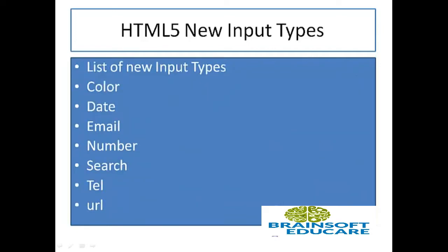This is an exhaustive list of new input types. These are: color, date, email, number, search, telephone, and URL — which stands for Uniform Resource Locator. We will see each element in detail later on.